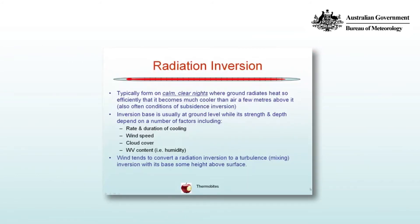Radiation inversions typically form on calm, clear nights where the ground is able to radiate efficiently and effectively and hence become much cooler than the air a few metres above it. Radiation inversions often form on nights where there's a subsidence inversion, because the inhibition of mixing across the subsidence inversion produces calm winds and, if there's not sufficient moisture, the nights will be clear.